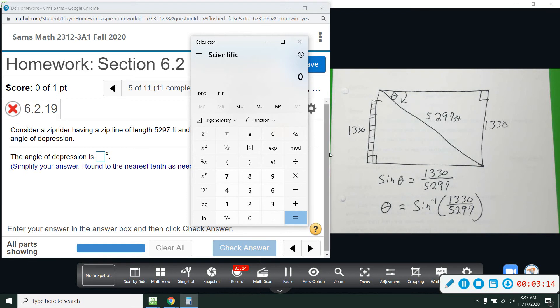Okay, so we're going to use the basic calculator and pull up the scientific function. So we have to do this part first, so I'm going to just go ahead and do parentheses, and I'm going to use 1330 divided by 5297, and then we're going to close that up, and then we're going to do the trig function and then the second inverse sine.